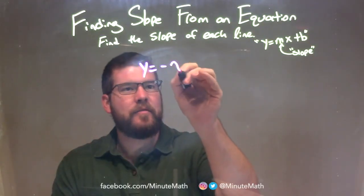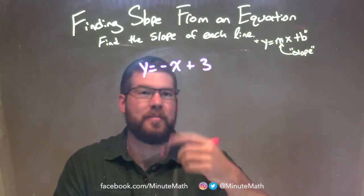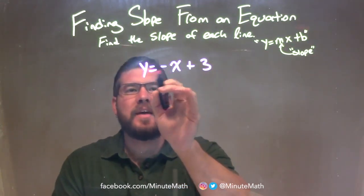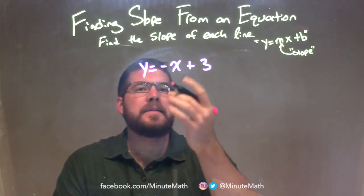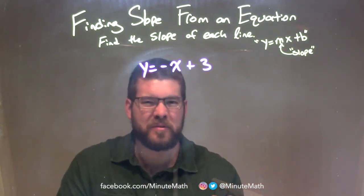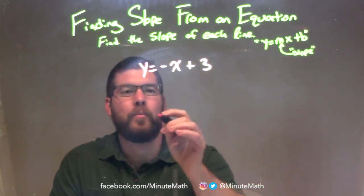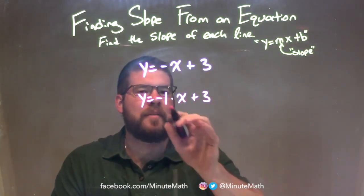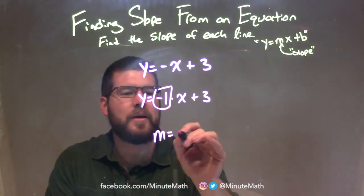y equals negative x plus 3. This one's semi-tricky. We first want to see if we can get it into slope-intercept form, and it is: y equals mx plus b. The key is identifying what the m value is, and be careful. When you see a negative out front, so many students will write, 'our slope m equals negative x.' That's incorrect. There's an imaginary 1 in front of x — when we see a letter by itself, we imagine there's a 1 written in front. So this really looks like y equals negative 1 times x plus 3. We can more easily see our m value isolated, and so our slope is m equals negative 1.